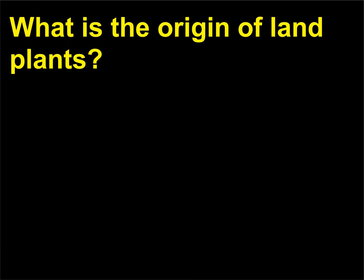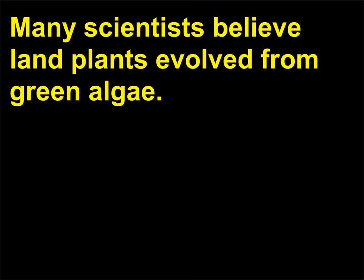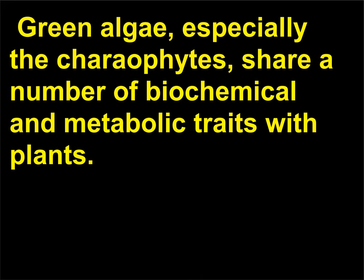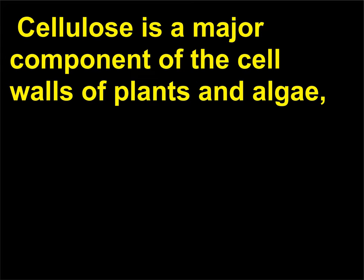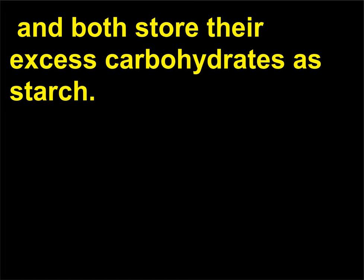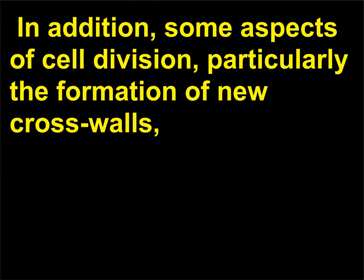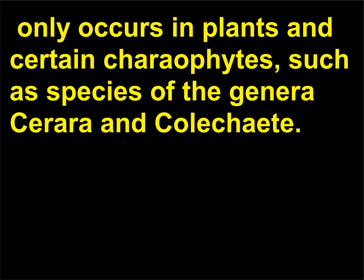What is the origin of land plants? Many scientists believe land plants evolved from green algae. Green algae, especially the charophytes, share a number of biochemical and metabolic traits with plants. Both contain the same photosynthetic pigments — carotenes, xanthophylls, as well as chlorophylls A and B. Cellulose is a major component of the cell walls of plants and algae, and both store their excess carbohydrates as starch. In addition, some aspects of cell division, particularly the formation of new cross walls, only occurs in plants and certain charophytes, such as species of the genera Spirogyra and Coleochaete.